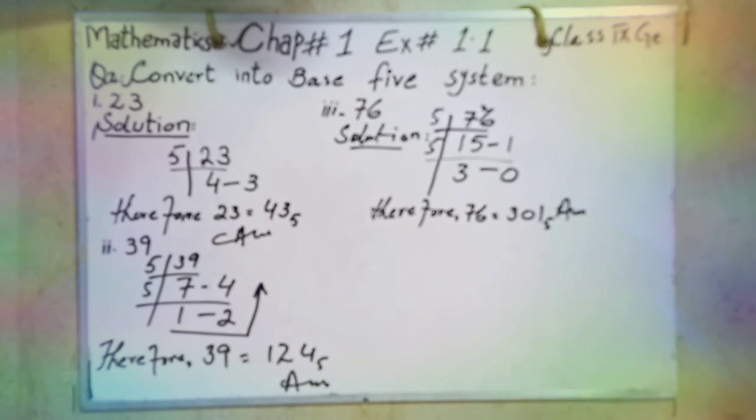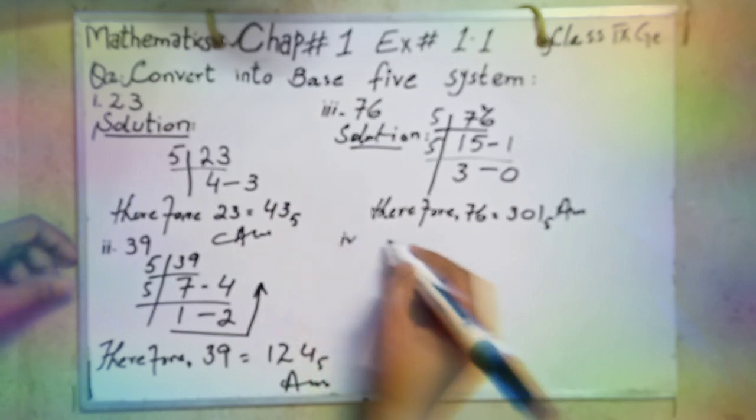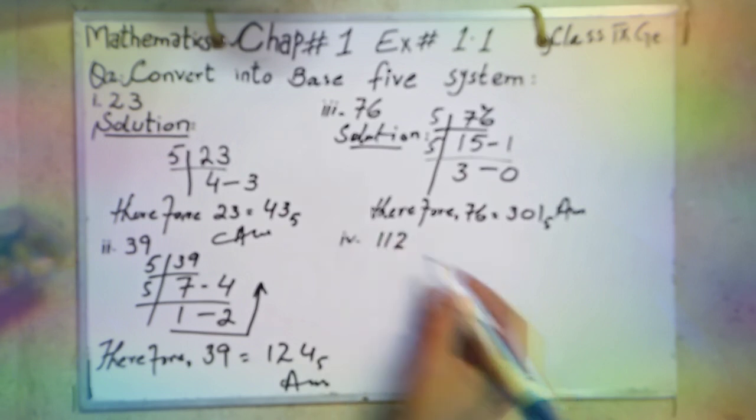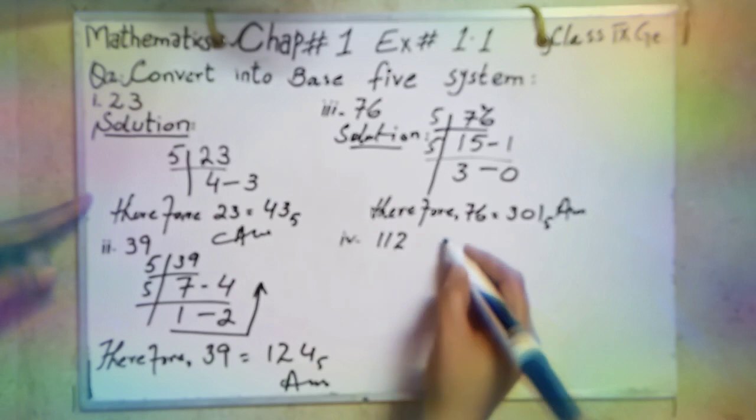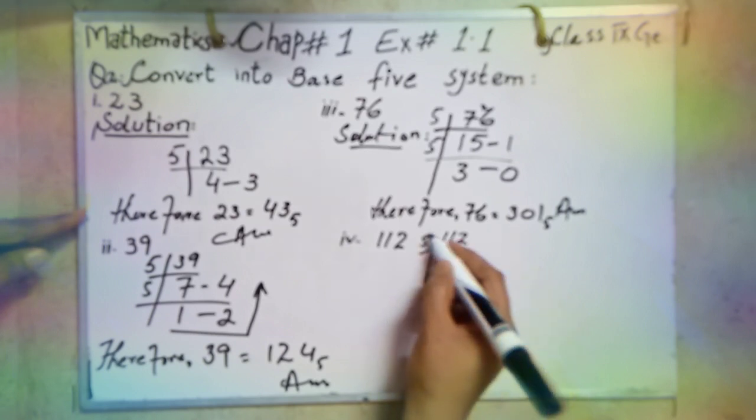Same method, same table. Now the fourth part is 112. 112 convert into base 5 system. Same table, 5.